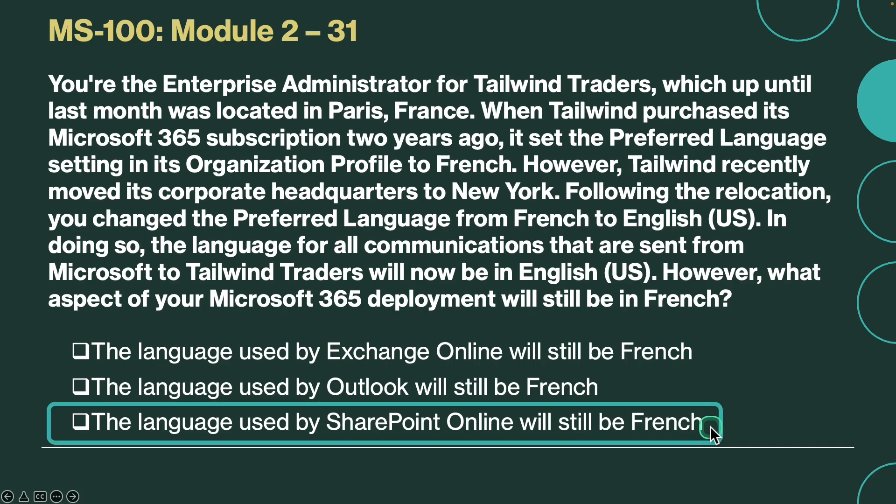We talked about this in the previous lesson. The correct answer is the language used by SharePoint Online will still be in French. If you change the preferred language after you sign up, the language used by SharePoint Online will remain the original language selected. It cannot be changed.